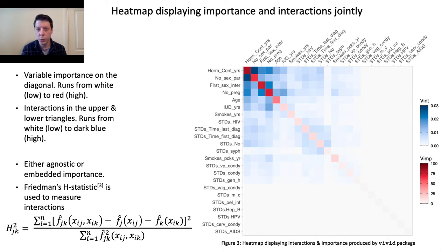We're not restricted to just one importance measure. You can use an embedded approach if your model allows it, or an agnostic approach. To measure the interactions, we use Friedman's H-statistic.